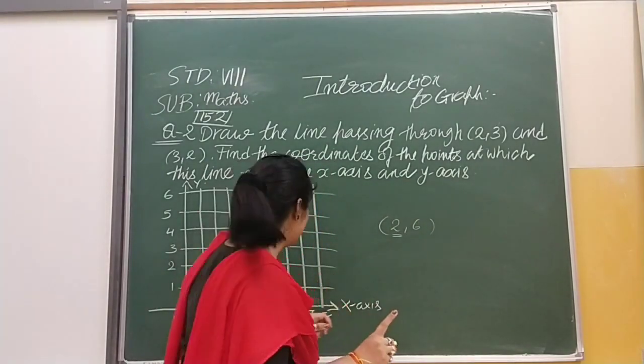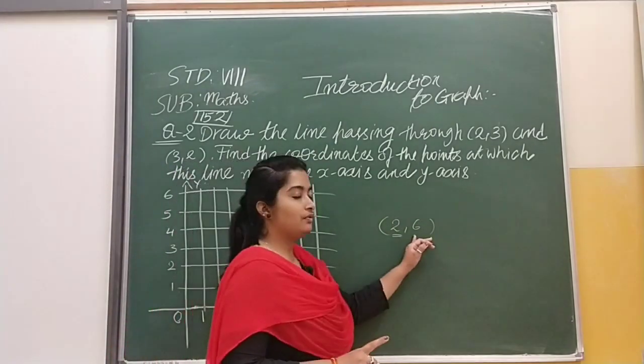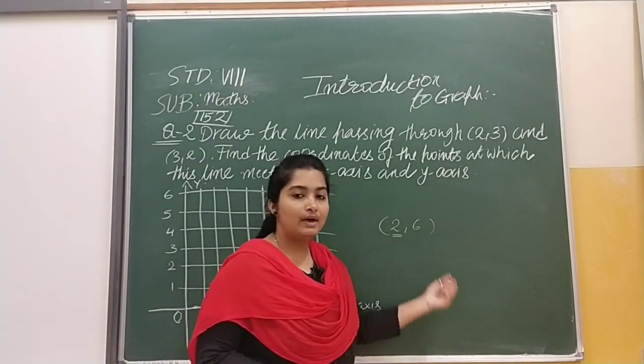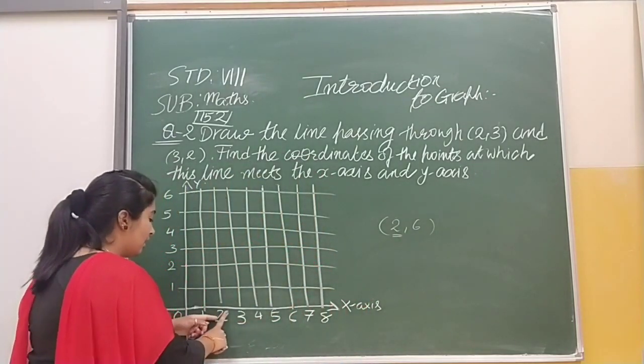First point is of x-axis - this line's point - and second point is of y-axis. This 6 is of y-axis. First of all, we have to put (2,6) here.